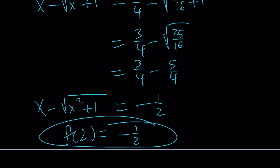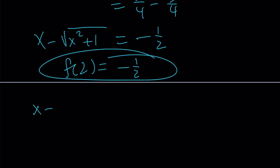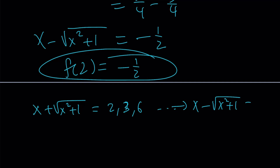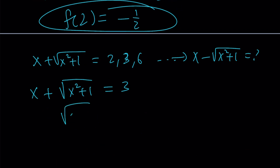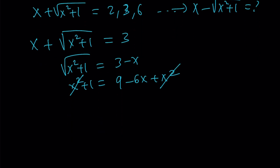We're going to do the same for 3 and 6. We're setting the left-hand side equal to 3. Just like before, solve the equation: isolate the radical, square both sides, cancel out the x squared, put the 6x on the left, subtract, and 6x equals 8, so x is equal to 4 thirds.